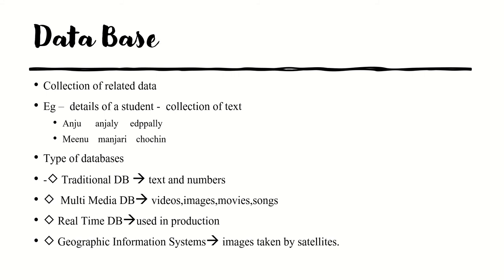Now we are going to discuss about a database. What is a database? A lot of data is available nowadays and they may be related in some manner. A database is a collection of related data. As an example, we have two records: the first field is a person's name like Anju, the second field is the house name of that person, and the third column represents their corresponding location. If you see the first values — Anju, Anjali, Adapali — we can see it is a collection of text.